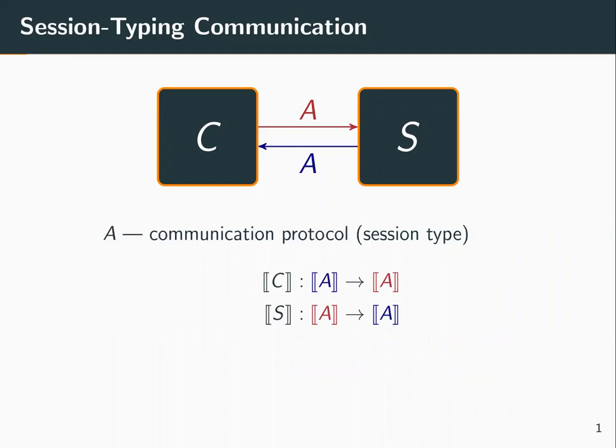Symmetrically, S will denote a continuous function from the domain of red communications to the domain of blue communications. Now when we transition from bi-directional communications to pairs of unidirectional communication, we lose information.